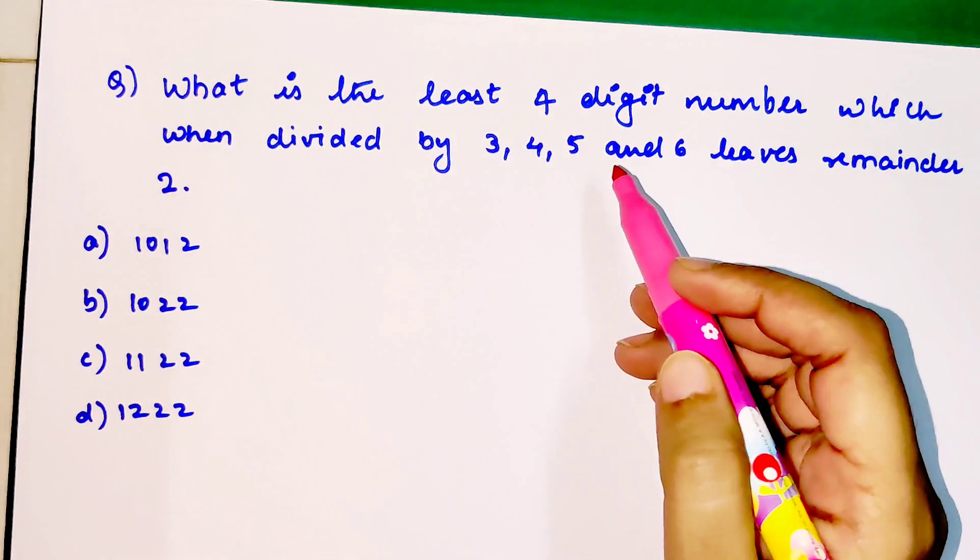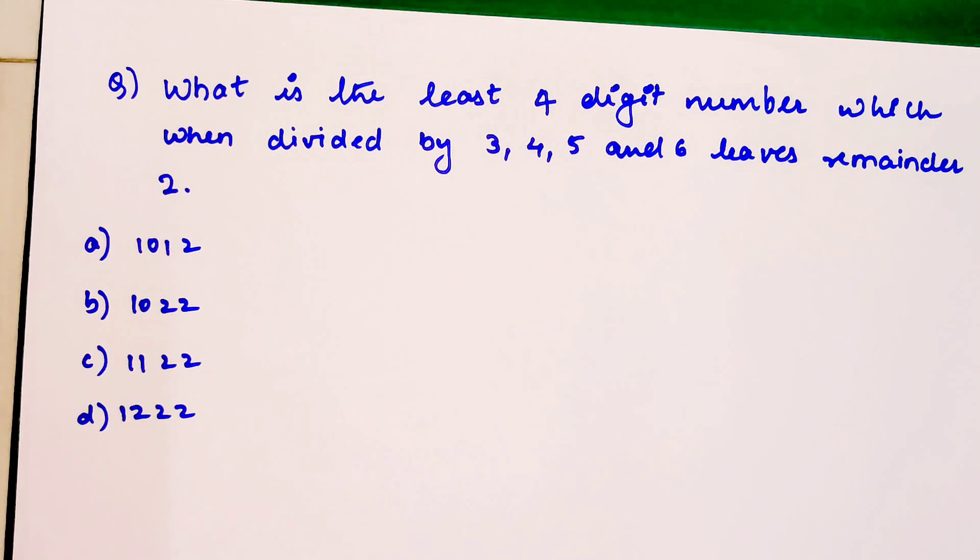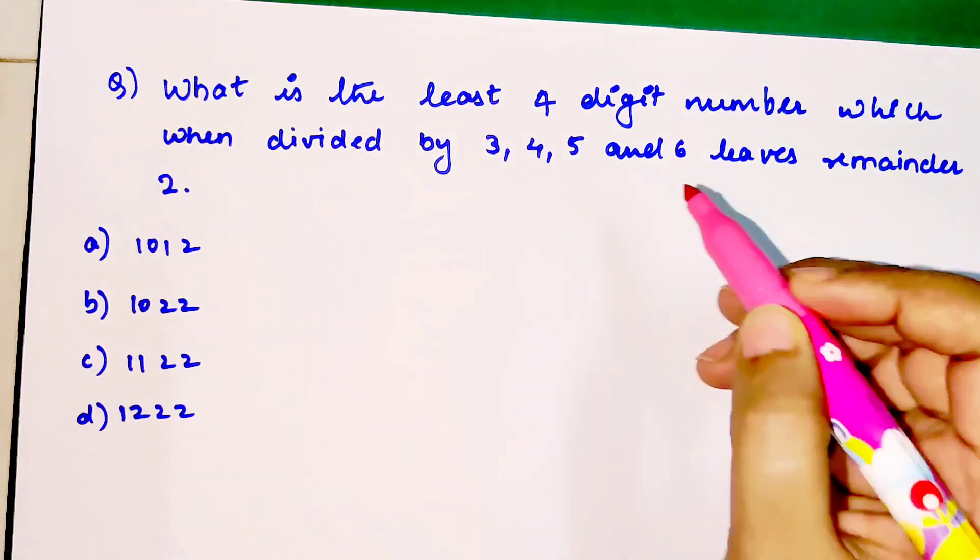The next question is: what is the least four-digit number which when divided by 3, 4, 5 and 6 leaves a remainder of 2? This kind of question has been asked in almost all these entrances. The trick is to find the LCM of all these numbers.